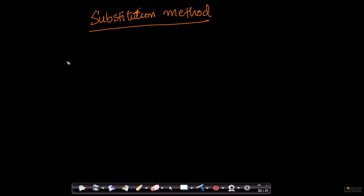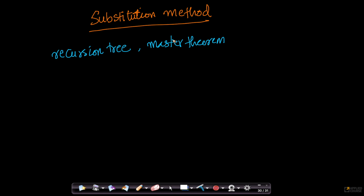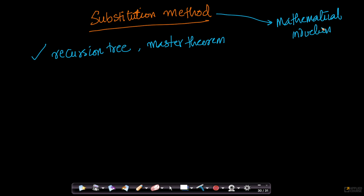We have already seen the recursion tree method and the master theorem. The recursion tree method was a graphical method where we would draw the tree itself. The master theorem uses a formulaic approach. The substitution method is a third popular approach wherein we use mathematical induction, which you must have learned during high school. I will also tell you the advantages and disadvantages of the substitution method.